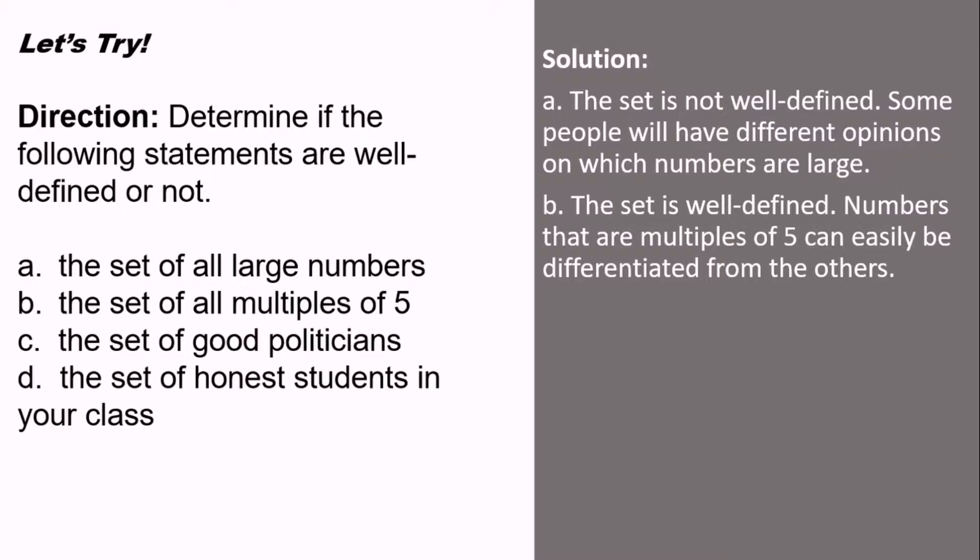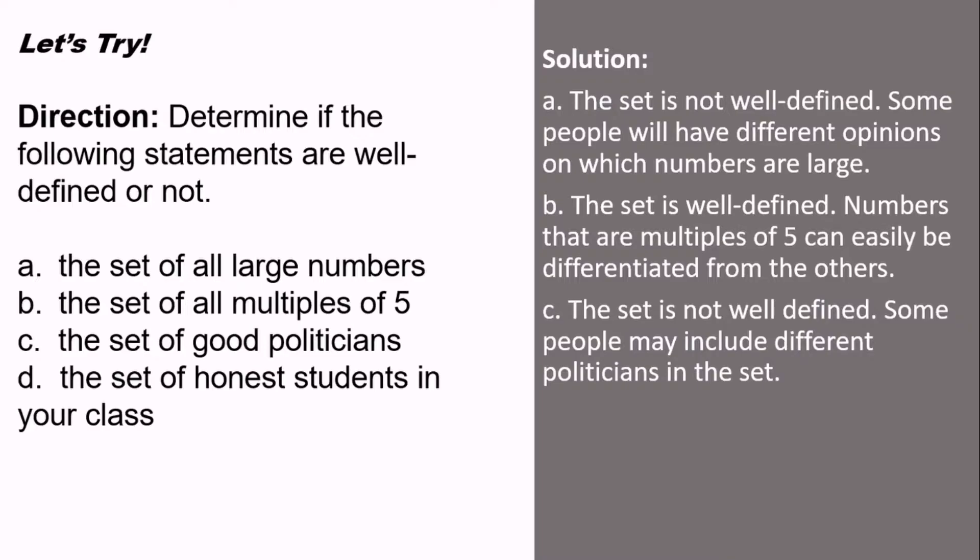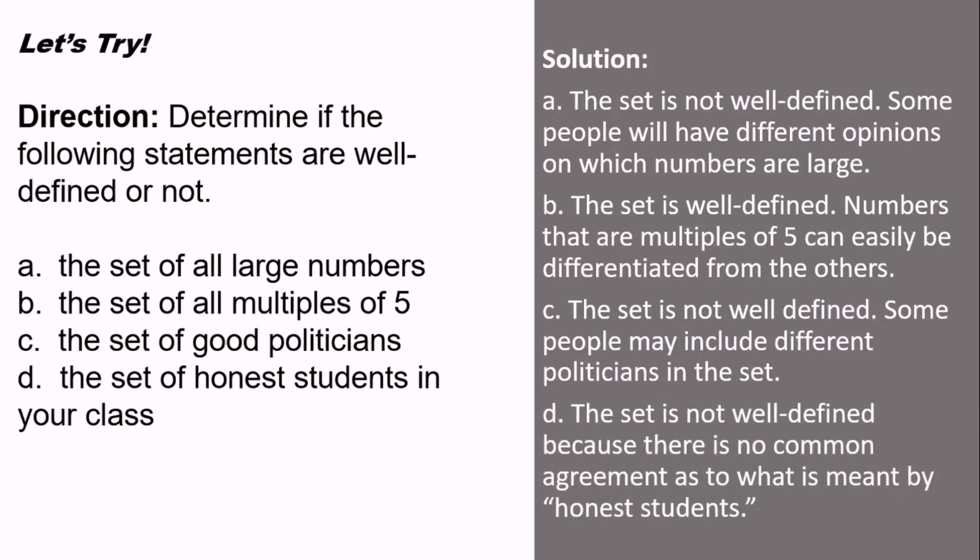Letter C, the set of good politicians. The answer is: the set is not well-defined. Some people may include different politicians in the set. Letter D, the set of honest students in your class. The answer for that is: not well-defined because there is no common agreement as to what is meant by honest students.